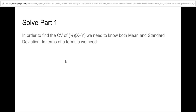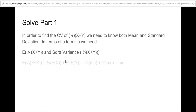This is a sum of random variables. We take the expected value of (1/2)(x + y) and we distribute the one-half to both x and y. Recall that for the expected value of a sum of random variables, you can split it up: one-half times E[x] plus one-half times E[y]. Since E[x] = E[y] = mu, we get one-half mu plus one-half mu, which equals mu.